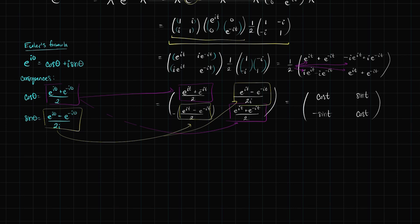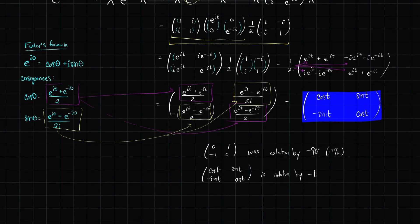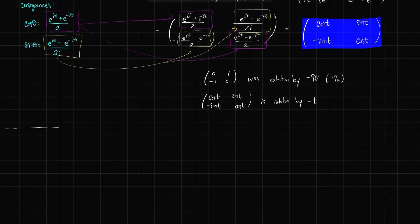The matrix we started with, [[0,1],[-1,0]], was rotation by negative 90 degrees or negative π/2. What we've computed here — this matrix exponential — is rotation by negative t radians. So cosine t, sine t, negative sine t, cosine t is rotation by negative t radians. The matrix exponential is the continuous analog of the quarter-turn rotation.